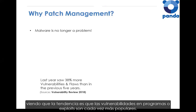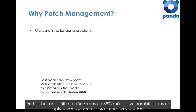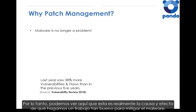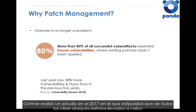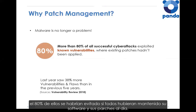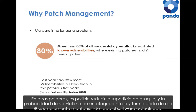What we're seeing as a trend is that vulnerabilities in programs, or exploits, is becoming more popular. In fact, in the last year we saw 38% more vulnerabilities in applications than we have done in the last five years. This really is the cause and effect of us doing such a good job at mitigating malware — the cyber attackers turn their attention to the weakest link. There was a study done last year by Gartner that stipulated that of all the successful cyber attacks from within 2017, 80% of them would have been prevented if everybody had kept their software and patching up to date. In other words, you can reduce your attack surface and the likelihood of being a victim of a successful attack by 80% just by keeping all of your software up to date.